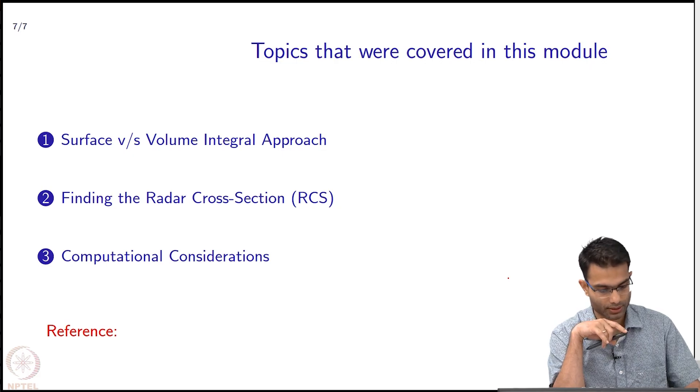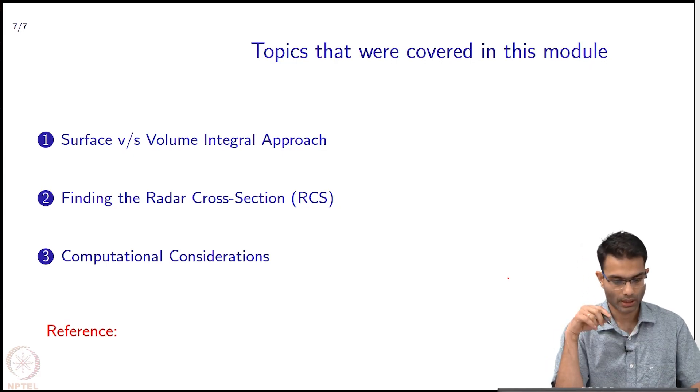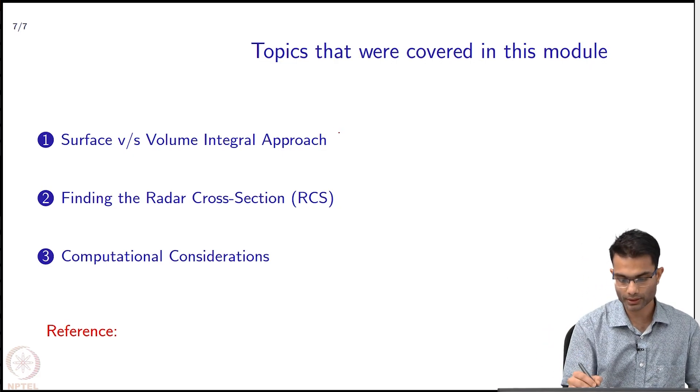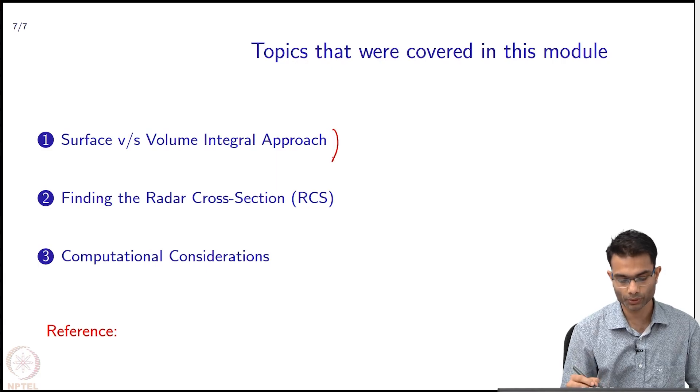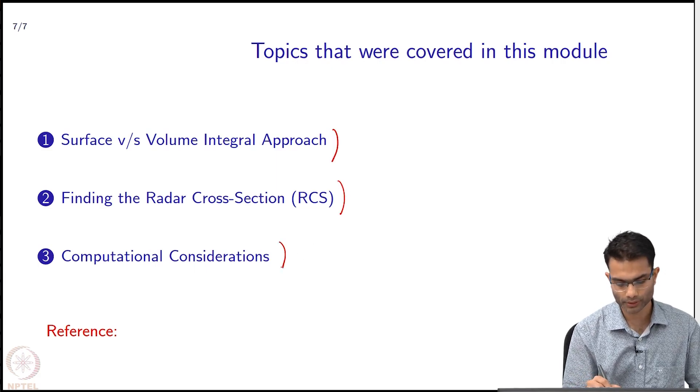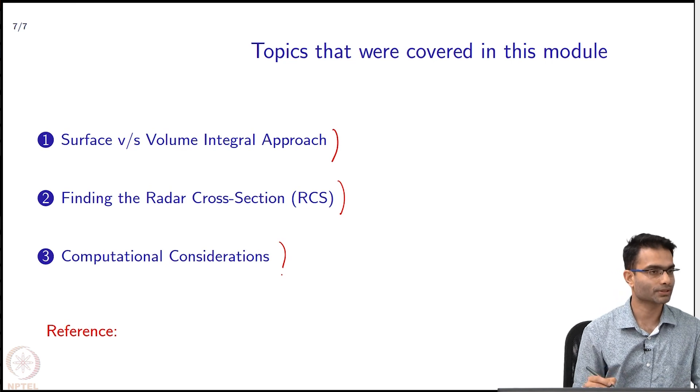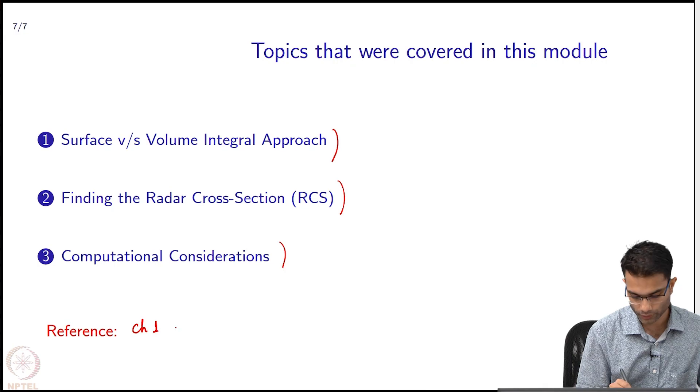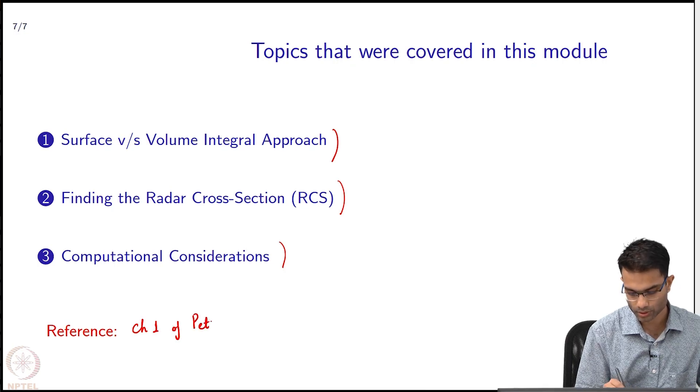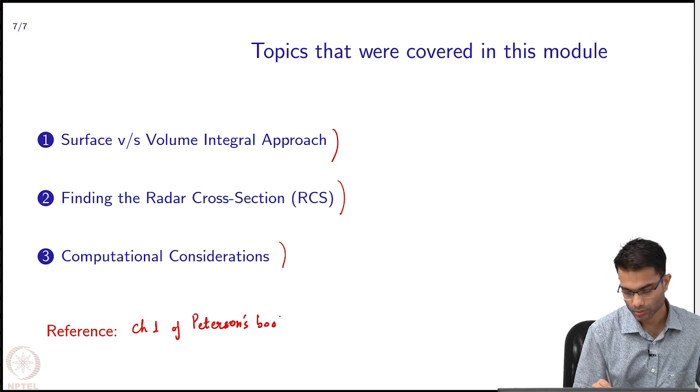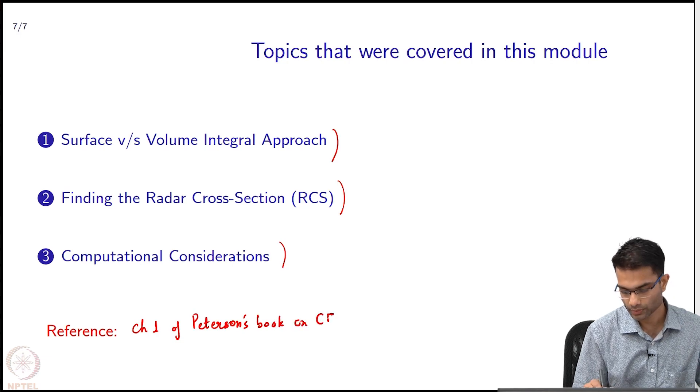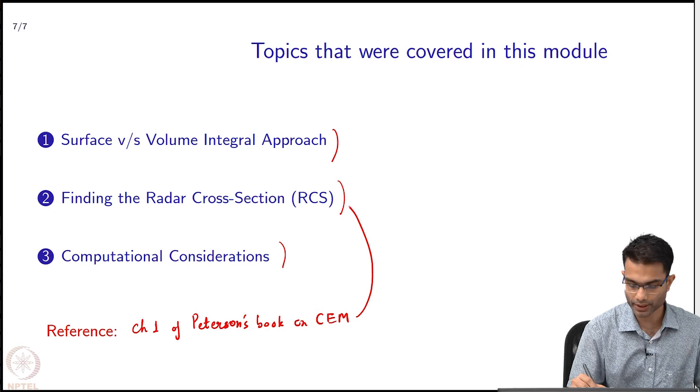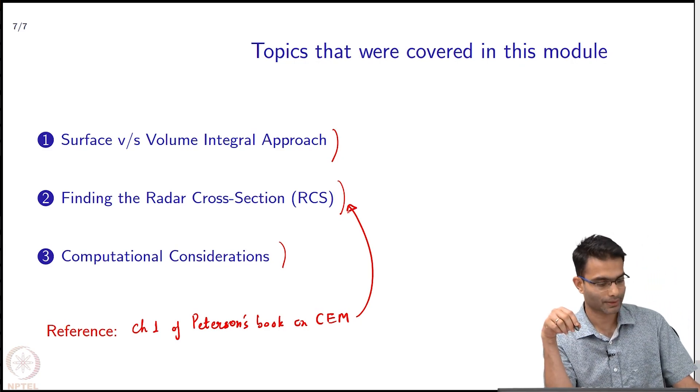So that is to summarize over here. That is what we did. We looked at the sort of differences between surface and volume, found out the RCS, and spoke a little bit about computational considerations. So for reference, I think chapter 1 of Peterson's book on CEM, he gives you this radar cross section and the approximations required quite nicely.